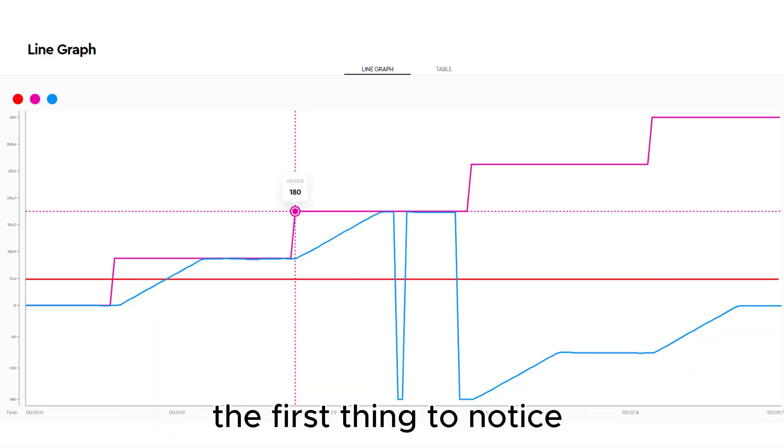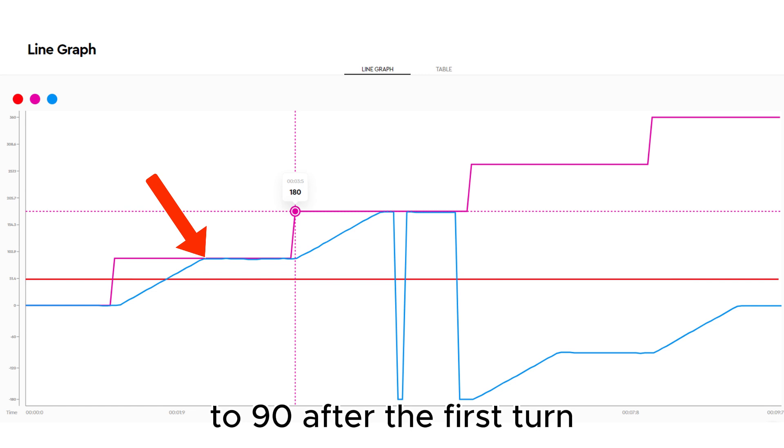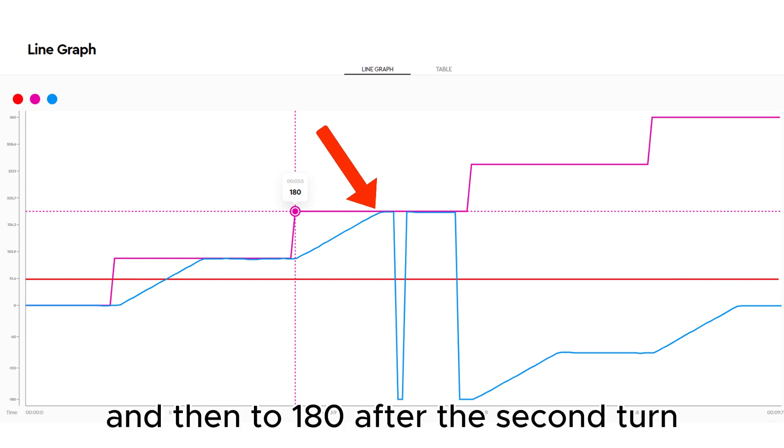The first thing to notice is the blue yaw sensor line. It moves nicely from 0 at program start to 90 after the first turn and then to 180 after the second turn.